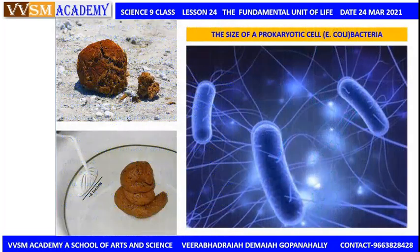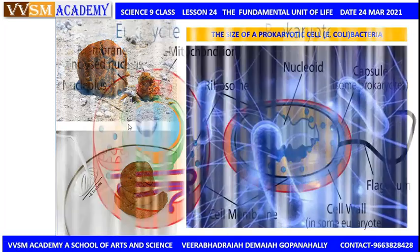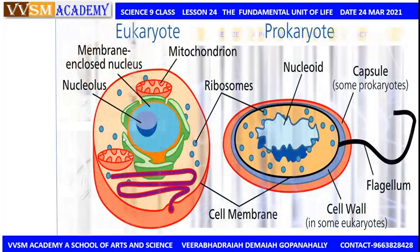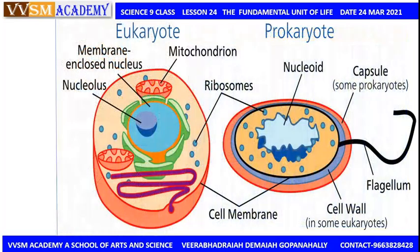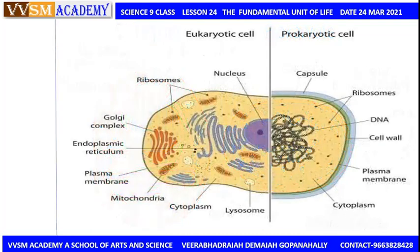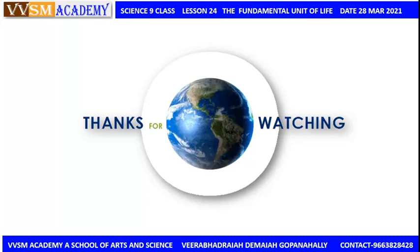This shows the size of the prokaryotic cell in context. Both prokaryotic and eukaryotic cells contain ribosomes, but the key differences are the membrane-enclosed nucleus, mitochondria, and other organelles present in eukaryotic cells. The main distinctions are in the cytoplasm, nucleus, ribosomes, DNA, and cell wall. This is the comparison between eukaryotic and prokaryotic cells.